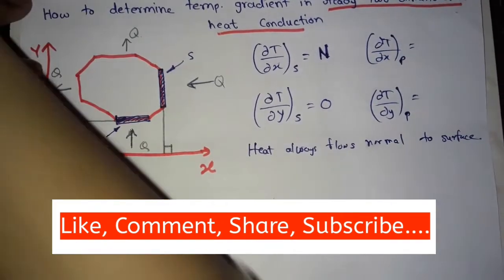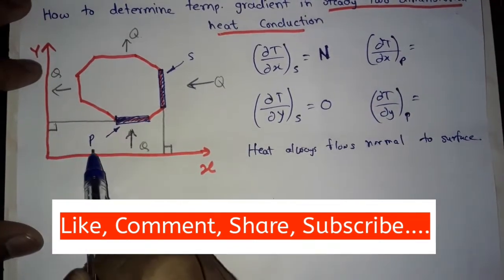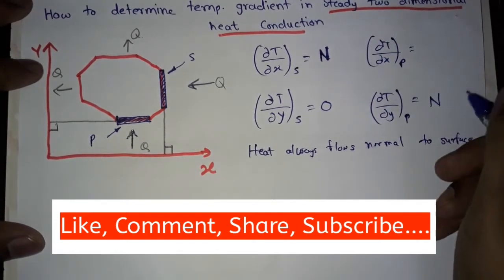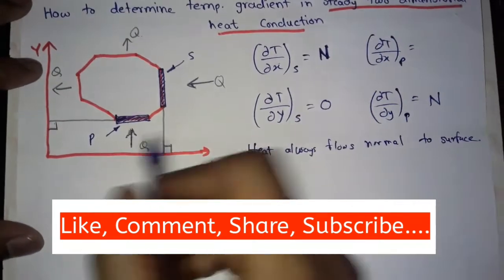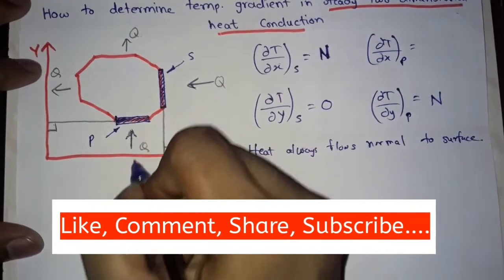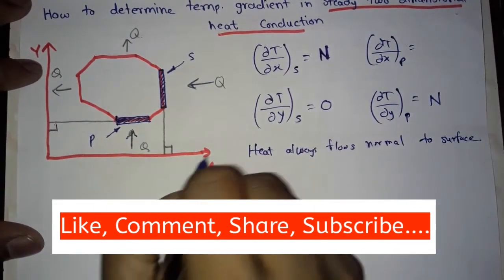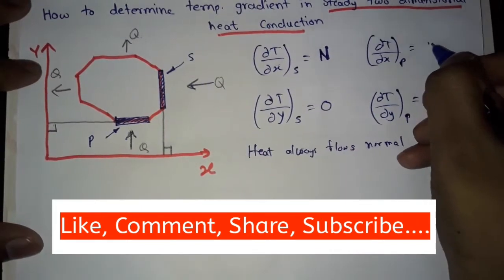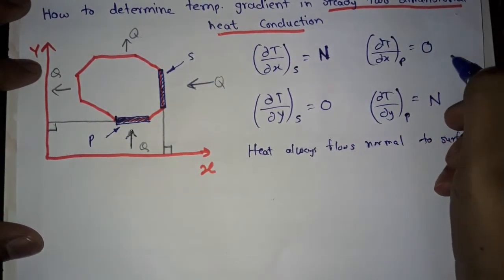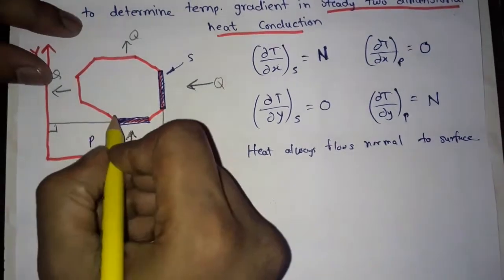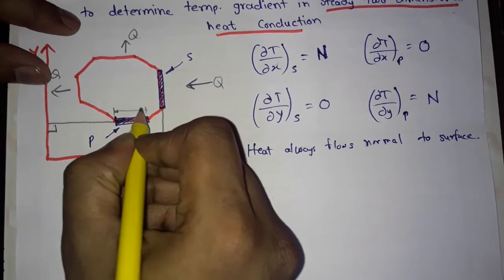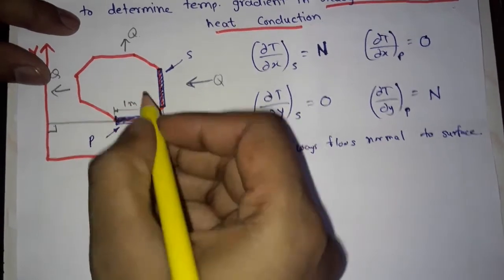Similarly, surface P is perpendicular to or normal to the y-axis, so ∂T/∂y for surface P will have some numerical value. And since surface P is not perpendicular to the x-axis, ∂T/∂x for surface P is equal to zero.